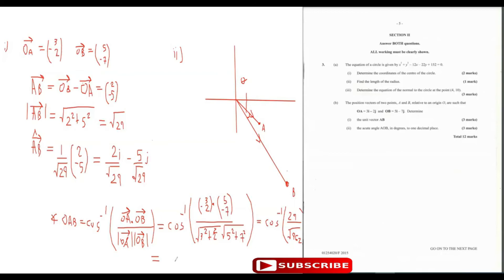Taking cosine inverse of 29 over root 962 — they didn't specify degrees or radians, so when they don't specify, you choose degrees. The angle is 20.8 degrees. They said give the answer to one decimal place, so that's 20.8 degrees. That takes care of question three.